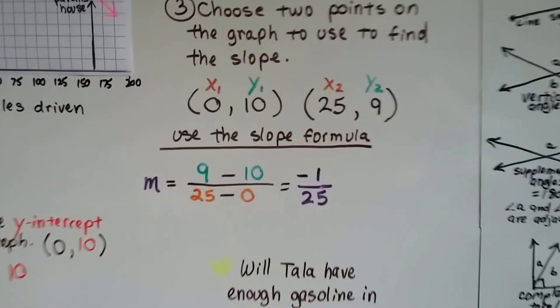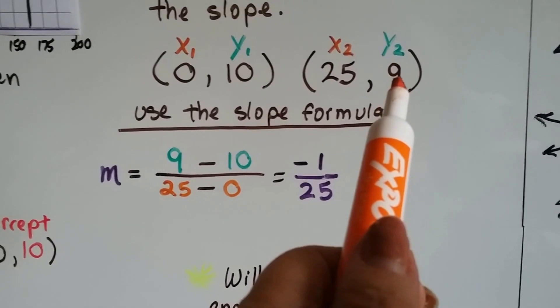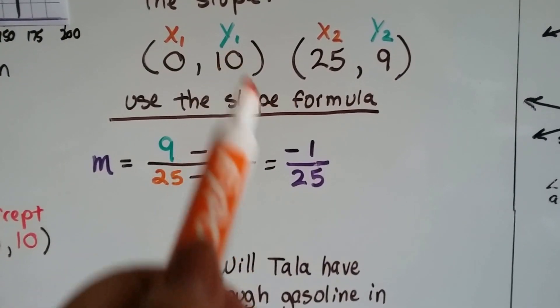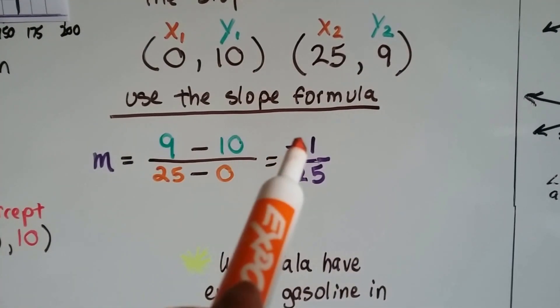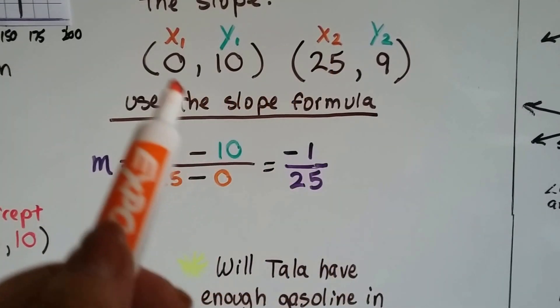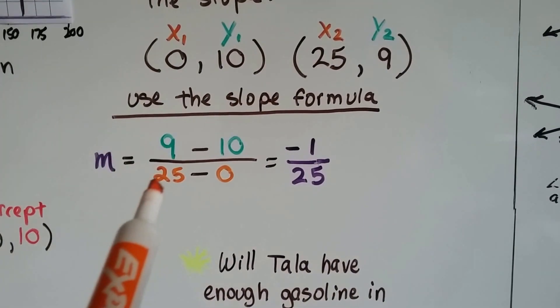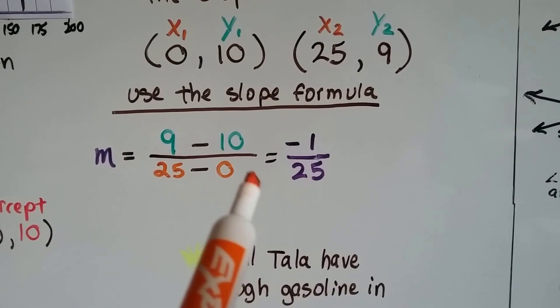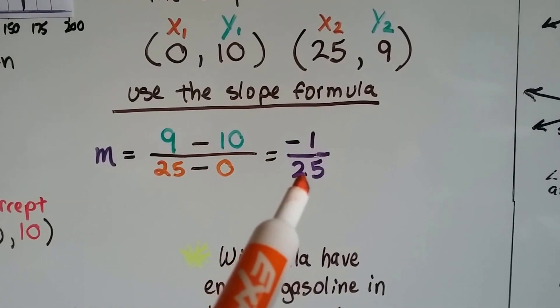We do our slope formula, and here's y2, 9. We need to take away y1, 10. 9 take away 10 is negative 1. Then we have x2, 25, and we take away x1, 0. That gives us 25. So we have negative 1 over 25.